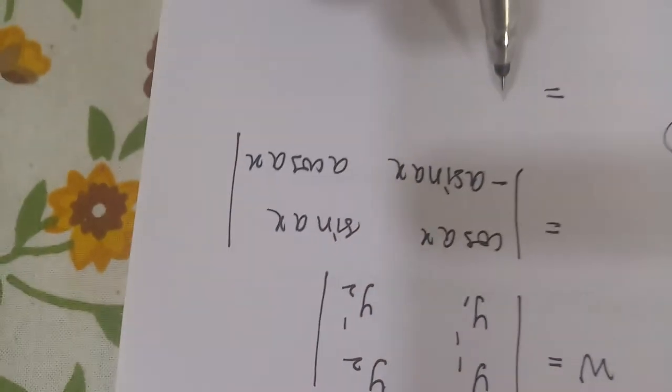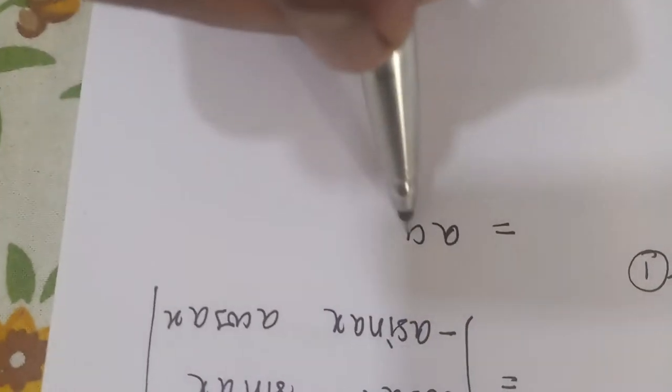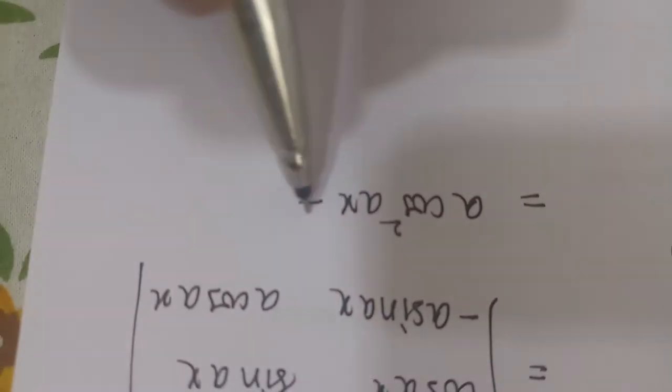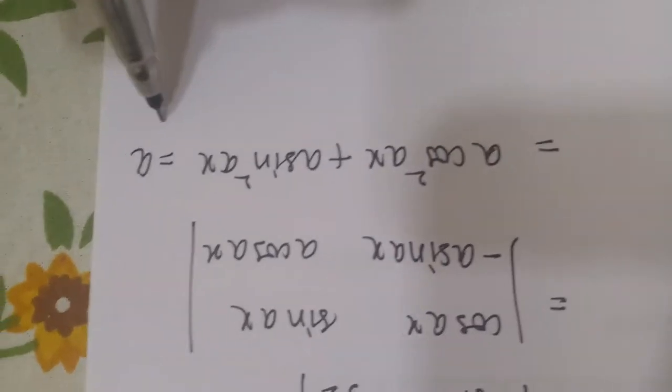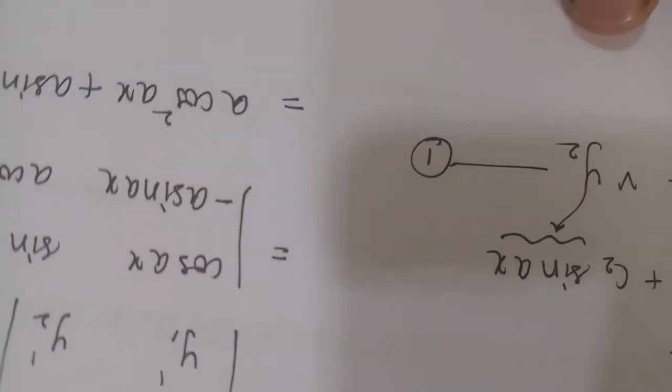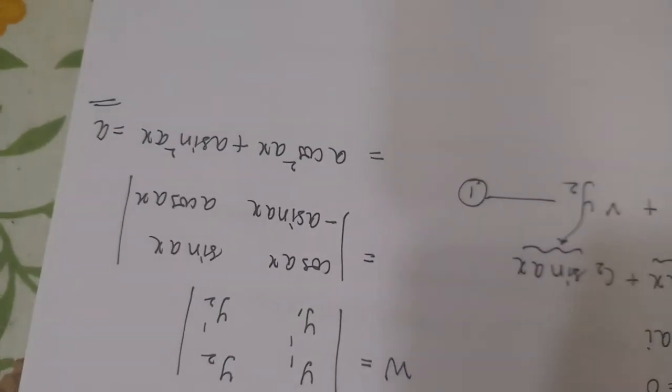So this will be equal to a cos square ax plus a sin square ax, which is basically giving you the answer as a. So here W answer is done. With u and v depending upon W, and W now known to you,